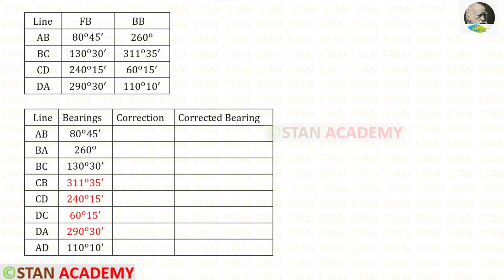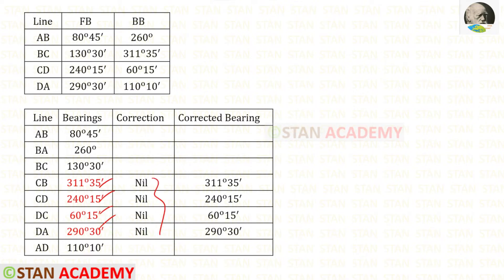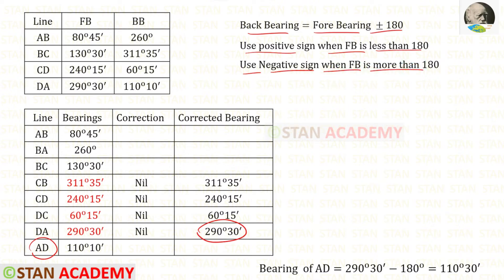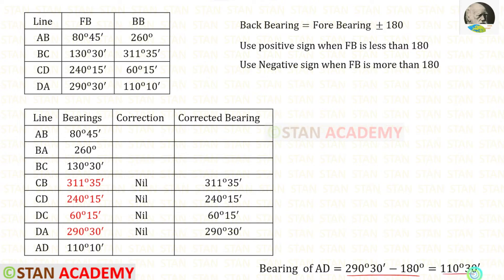In the table let us add two more columns: correction and corrected bearings. For the four readings from stations C and D, no correction is required, so we can directly enter them in the corrected bearings column. Now using the forebearing of DA we can find the corrected backbearing AD. The formula to find the backbearing is forebearing plus or minus 180 degrees — use the positive sign when the forebearing is less than 180, and the negative sign when the forebearing is more than 180. Since DA is more than 180, we use the negative sign, giving us 110 degrees 30 minutes.